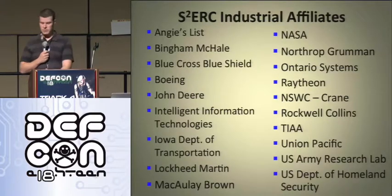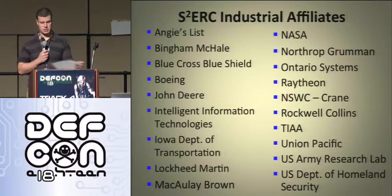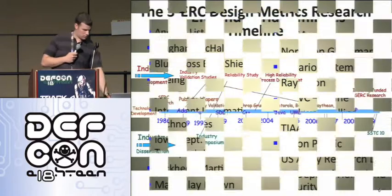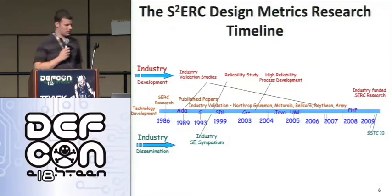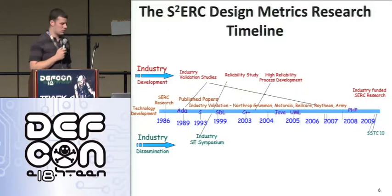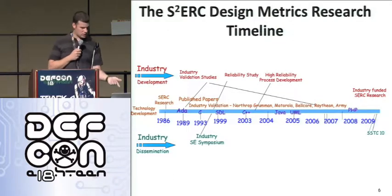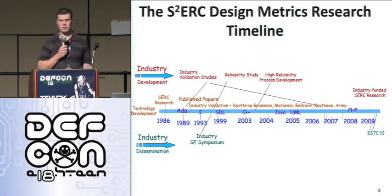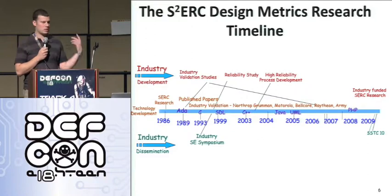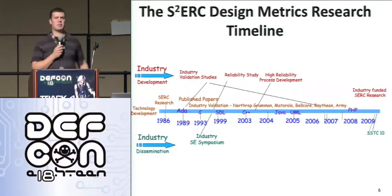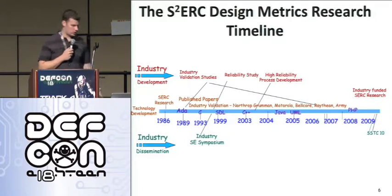We have a ton of industrial affiliates. Here's the design metrics timeline. Like I said, it's about 20 years of metrics research. It started in 1986, and I believe it all came out of Purdue University — it's Dr. Zage's baby. The first research paper they sent me was from Purdue, so I'm guessing that's where he did this research.